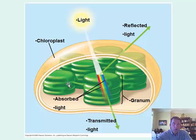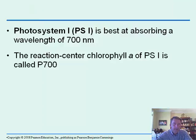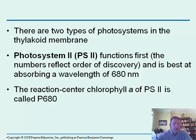A photosystem is a reaction center or complex of thylakoids that are light-harvesting complexes. There are two of them: photosystem one and photosystem two. Light actually comes into photosystem two first, and it is best at absorbing the type of light required. Photosystem one absorbs at a wavelength of about 700 nanometers, while photosystem two functions first and is best at absorbing at about 680 nanometers.